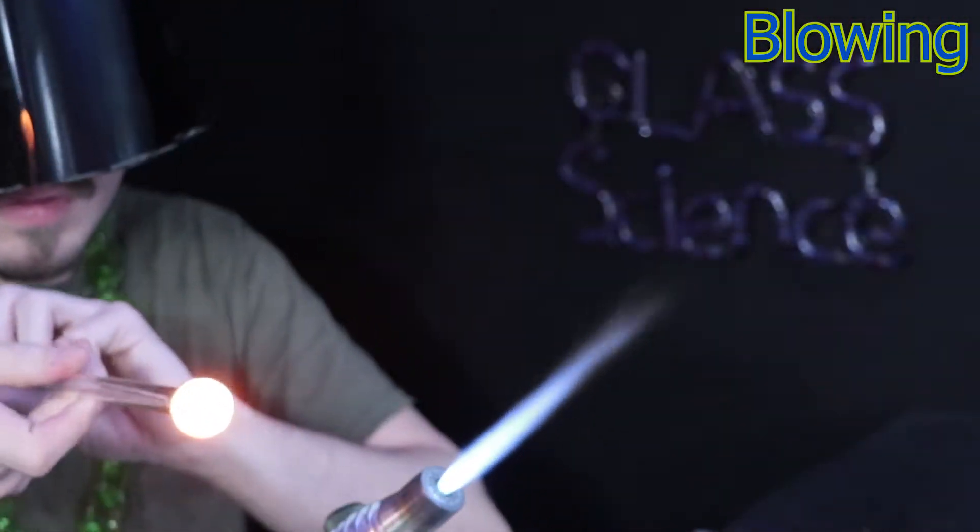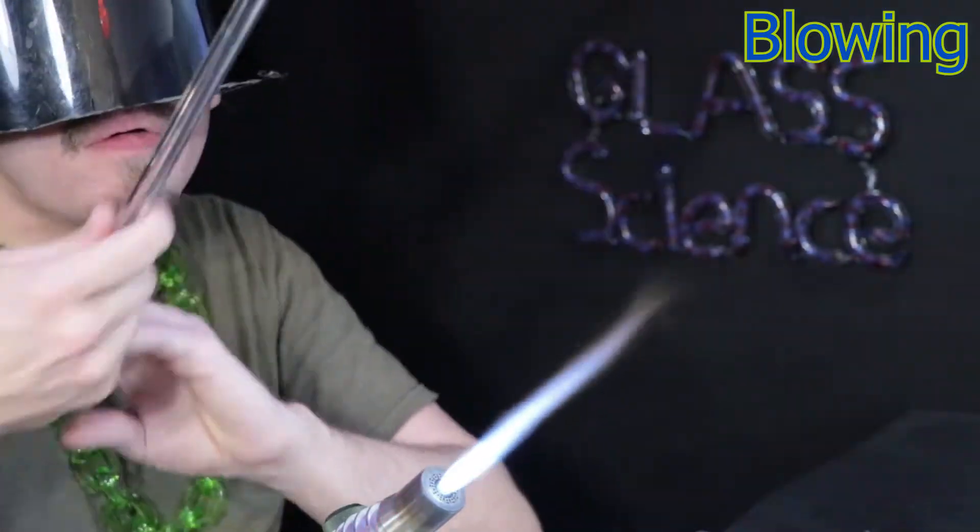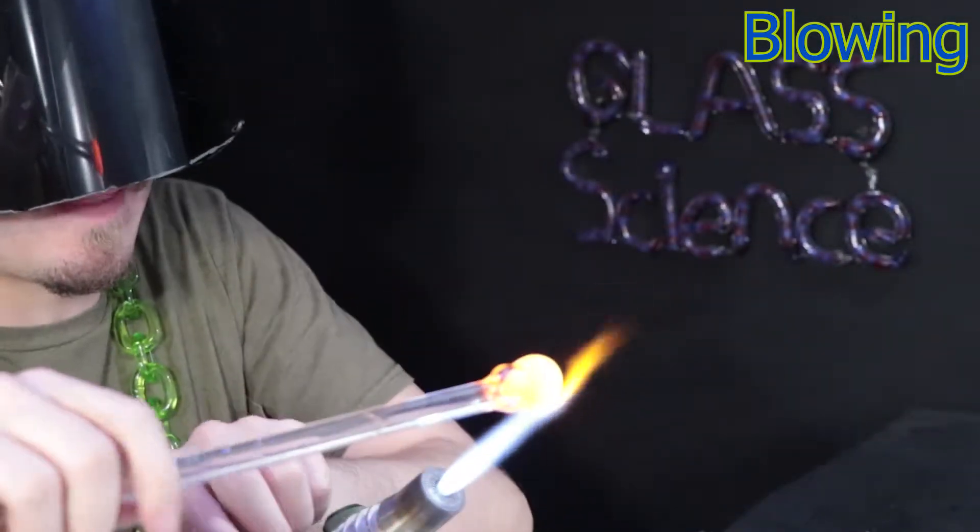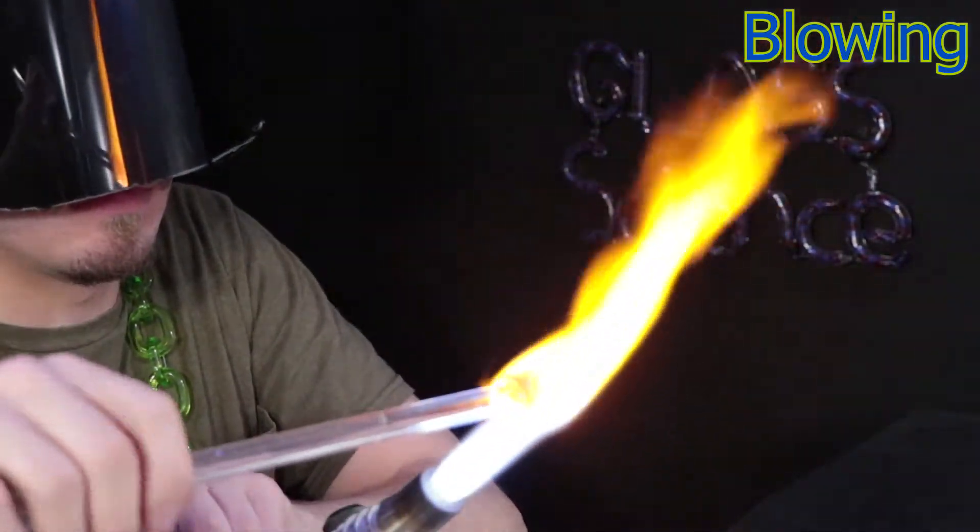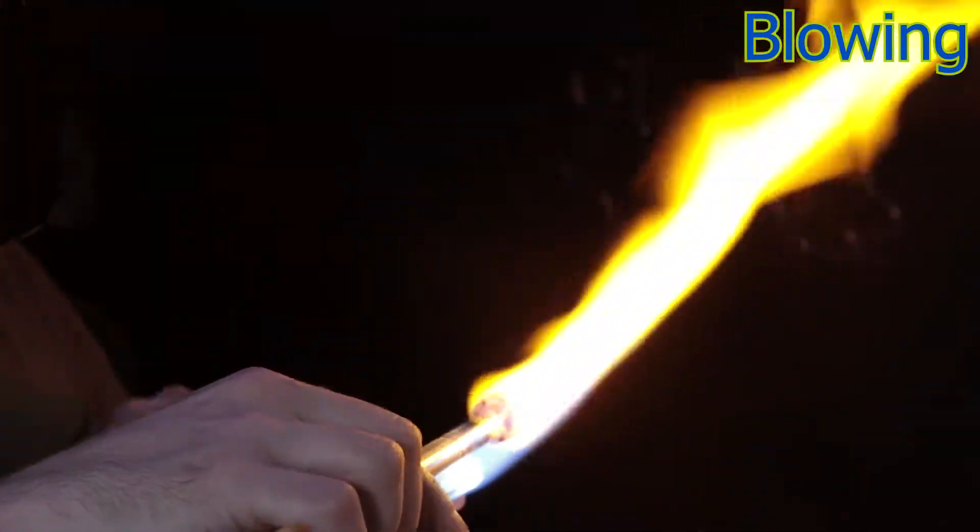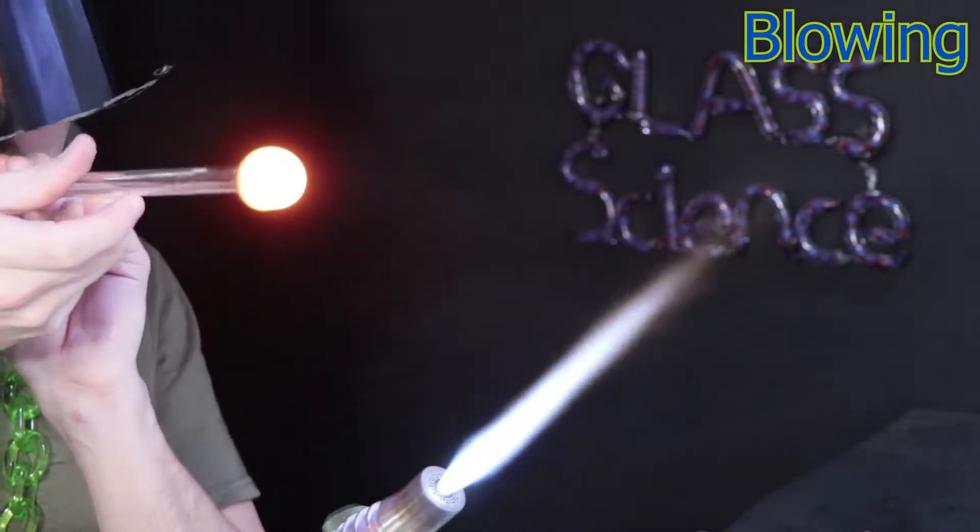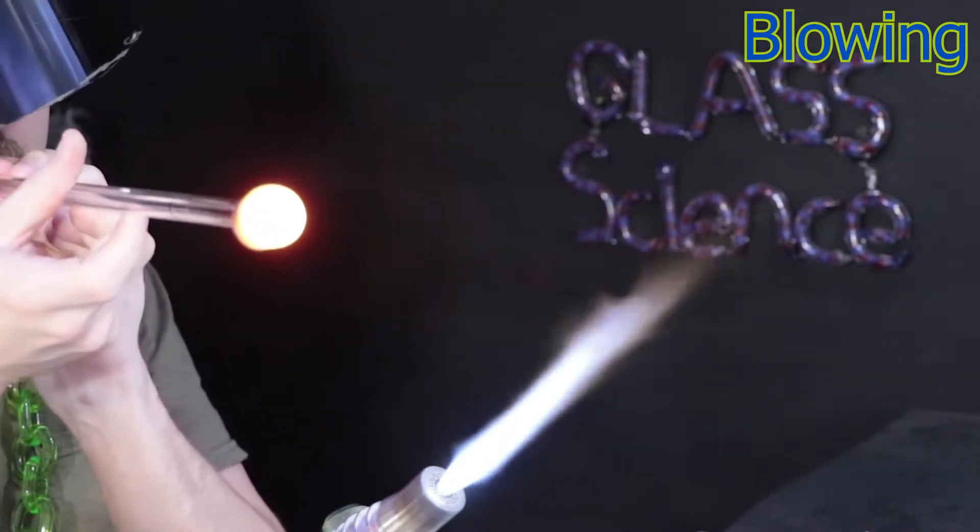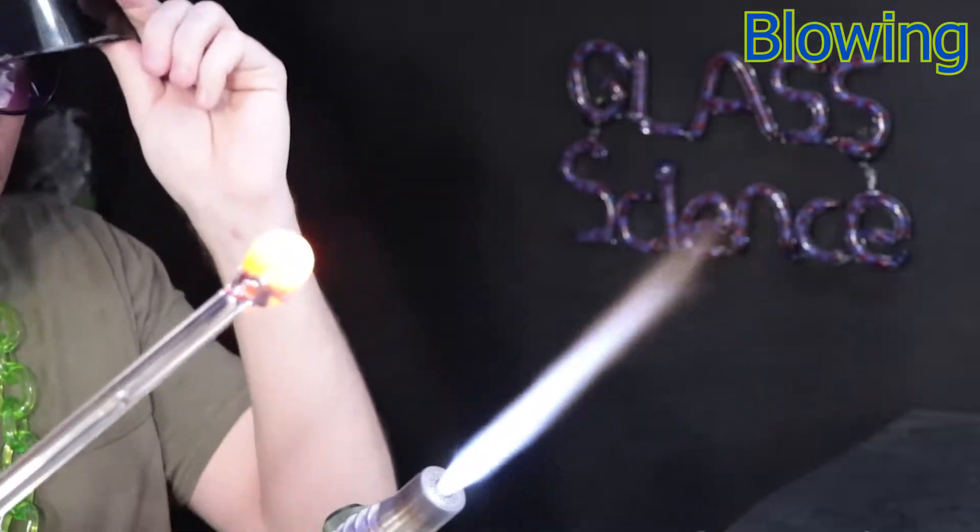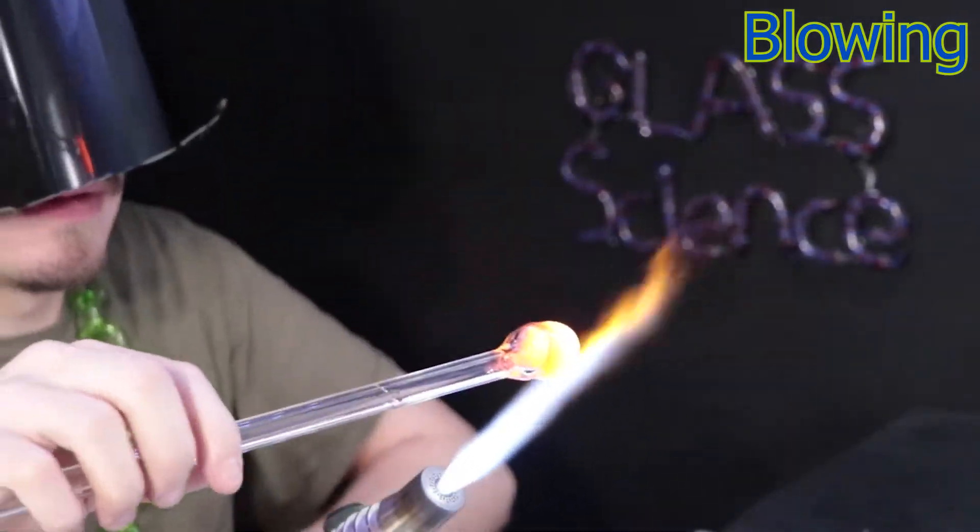And now I'm going to heat it up very, very hot and puff really hard into it, which will start to push an air pocket into the back of the gather, where the blow tube's connected. And I'll keep heating it up and repeating this process to slowly push that air pocket through the entire piece of glass, which at that point, it would be hollow.